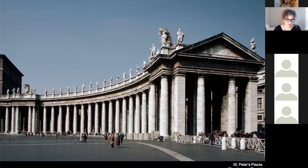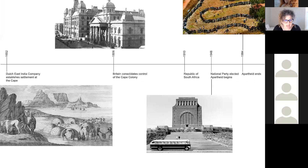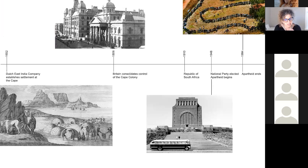I want to take a little side trip to define apartheid, because some of you were born after apartheid ended. Apartheid literally means 'apart.' It was a policy set in place in 1948 when the National Party was elected in South Africa. But we need to go back further to understand the context. In 1652, the Dutch East India Company came to what is now the Western Cape region.